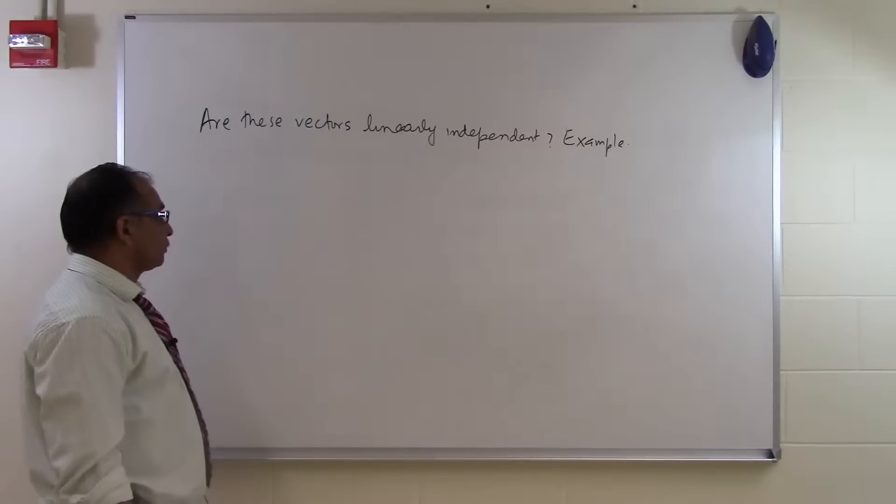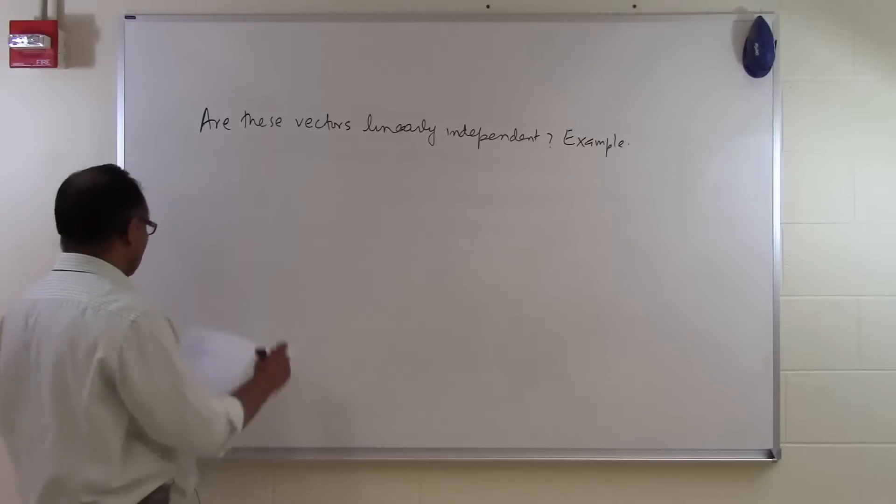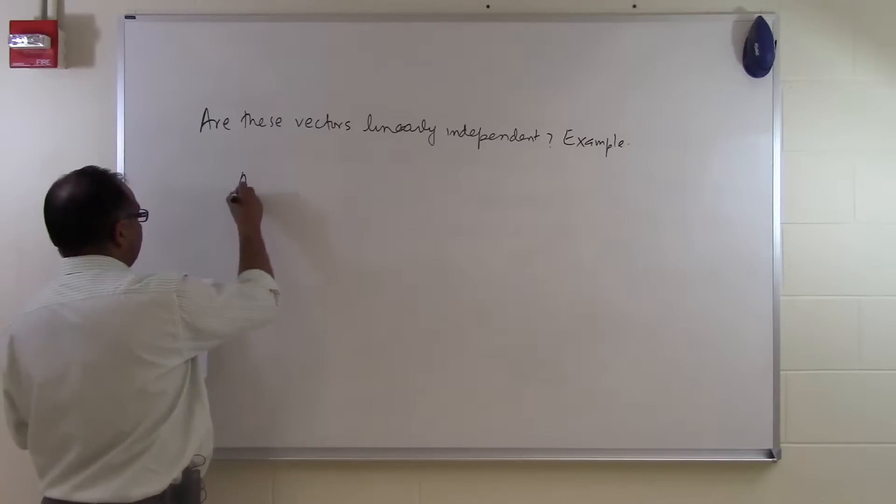In this segment, we will take some examples to see whether you can show that a particular set of vectors are linearly independent. So let's suppose somebody says, I am going to give you three vectors.